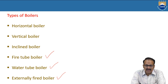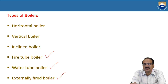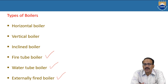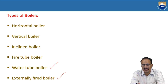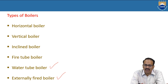In the fire tube boiler, the pipes will be there and surrounding these pipes the water will be there in the boiler. The fire will flow through these tubes — that's why it is named the fire tube boiler. In the water tube boiler, this is the reverse case: the fire will be surrounding these tubes and water will be passing through these pipes.